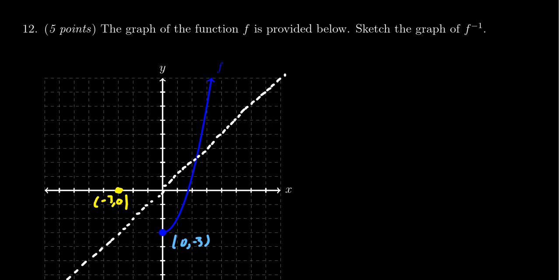Also, whenever the function crosses the diagonal line, that means the x and y coordinate are actually the same. And that's where the function will intersect its inverse.